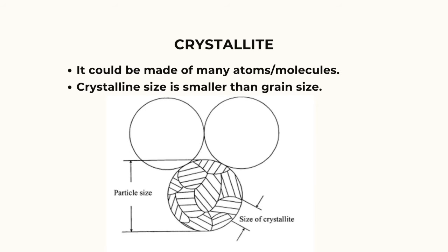At first, what is crystallite? Crystallite is a small crystal. It could be made of many atoms or molecules. Crystalline size is smaller than grain size. XRD diffractogram can be used to calculate crystalline size using Scherrer's formula.